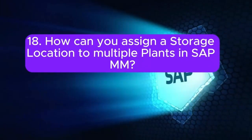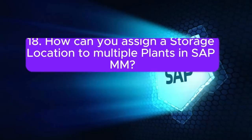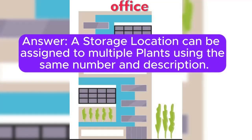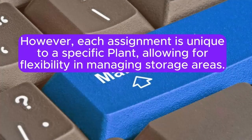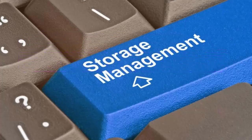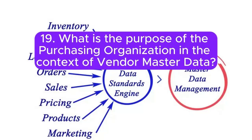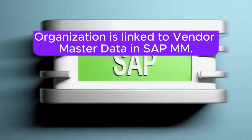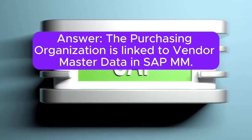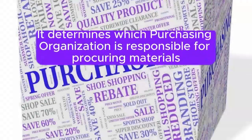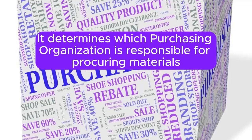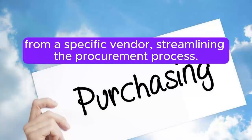Question 18: How can you assign a storage location to multiple plants in SAP MM? A storage location can be assigned to multiple plants using the same number and description. However, each assignment is unique to a specific plant, allowing for flexibility in managing storage areas. Question 19: What is the purpose of the purchasing organization in the context of vendor master data? The purchasing organization is linked to vendor master data in SAP MM. It determines which purchasing organization is responsible for procuring materials from a specific vendor, streamlining the procurement process.